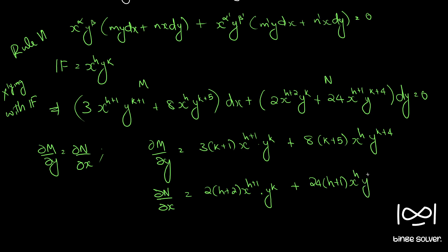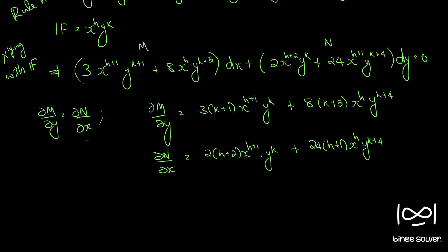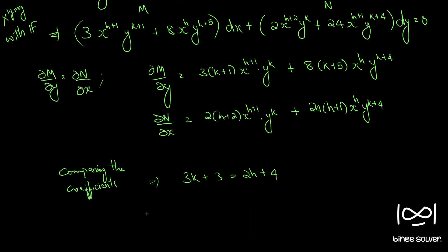Since ∂M/∂y equals ∂N/∂x, we compare coefficients. Comparing the x raise to h plus 1 terms: 3(k plus 1) equal to 2(h plus 2), giving 3k plus 3 equal to 2h plus 4. Comparing the x raise to h terms: 8(k plus 5) equal to 24(h plus 1), giving k plus 5 equal to 3h plus 3. These are our two equations.